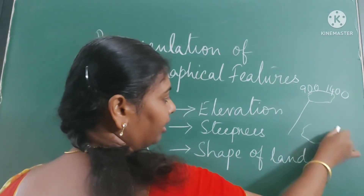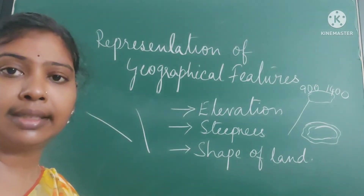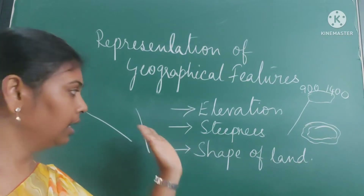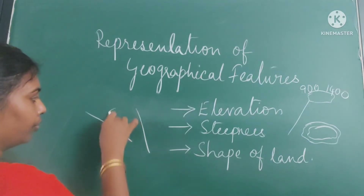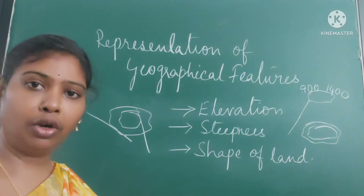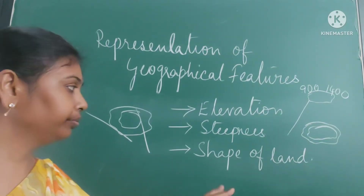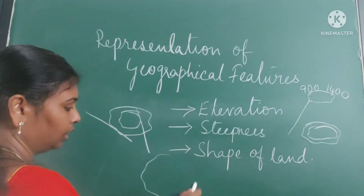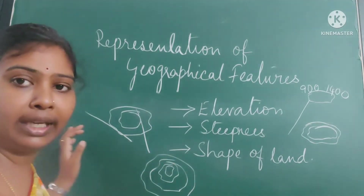If two contours are very near to each other, that denotes a very steep slope. If contours are far off from each other, it denotes a gentle slope. Then, the shape of the contour — if the contours are arranged like concentric rings closing inward, that denotes a conical hill.